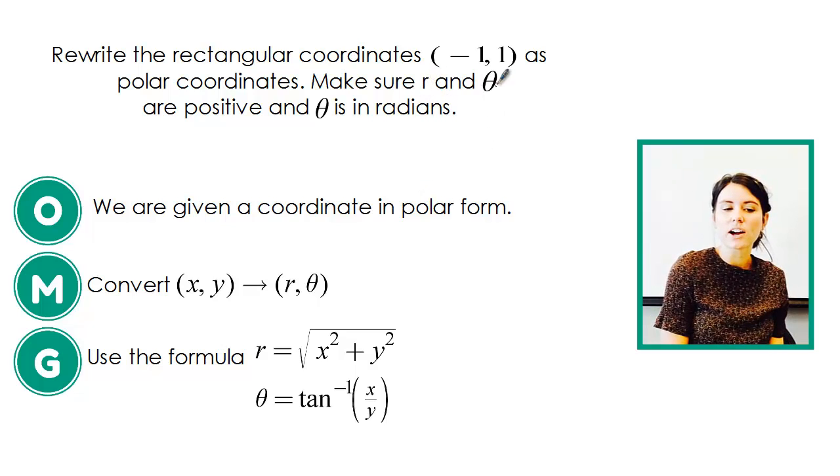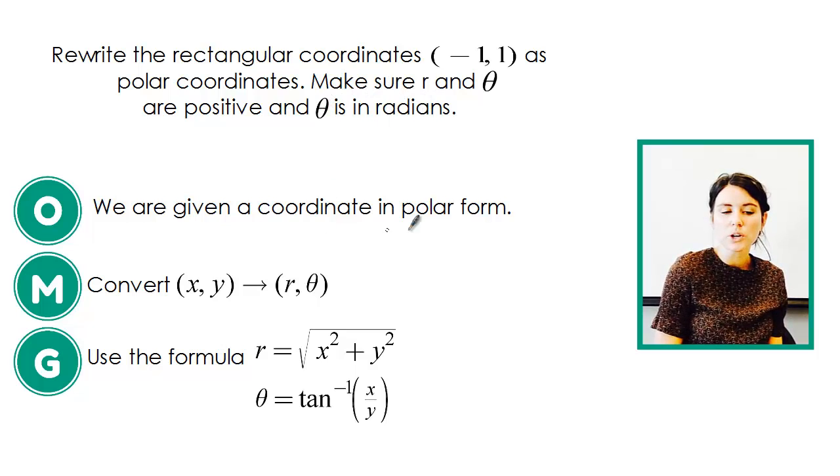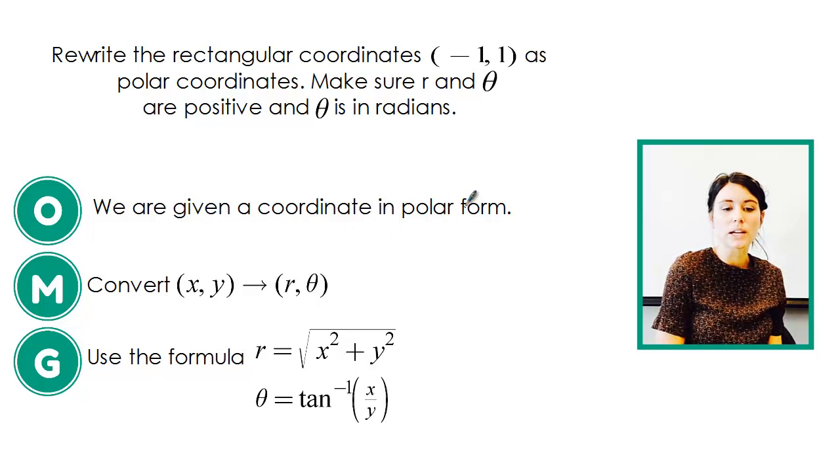We want to make sure that our r and theta are positive and that our theta is in radians. So we're going to go through and we're given rectangular form. That should say rectangular form. That's what I get for copying and pasting.